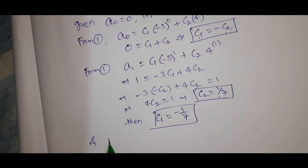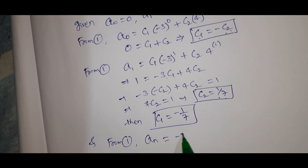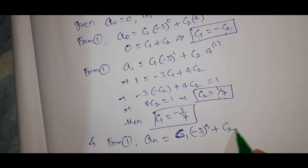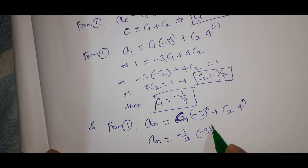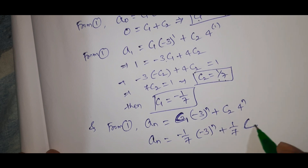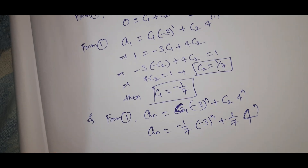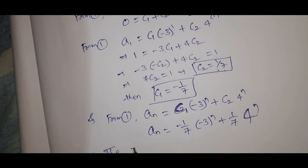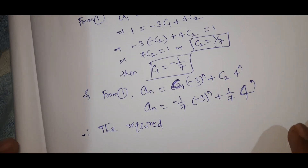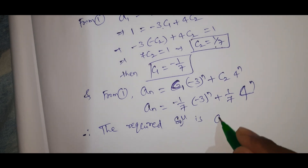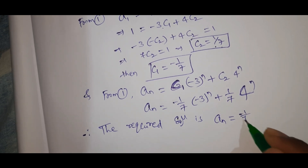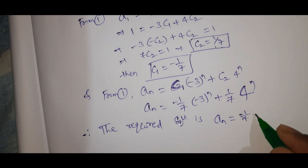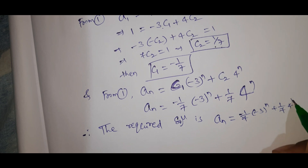Therefore C1 equal to minus 1 by 7. From equation 1, a_n equal to C1 times (minus 3)^n plus C2 times 4^n, which gives a_n equal to (minus 1/7)(minus 3)^n plus (1/7)(4^n). Taking 1/7 as common, the required solution is a_n equal to (1/7)[4^n minus (minus 3)^n].